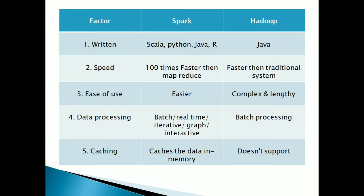Next is speed. Hadoop is much faster compared to traditional database systems such as SQL. But Spark is 100 times faster than MapReduce, which is Hadoop, since Spark provides in-memory computation. So the speed of Spark is high compared to the Hadoop architecture.